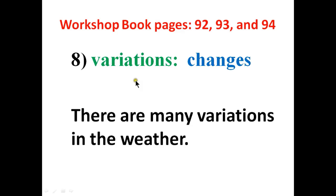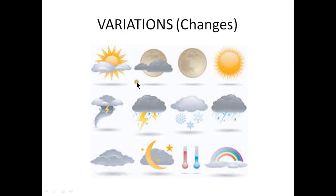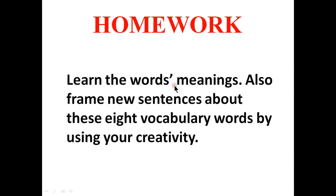The last word is 'variations.' Variations means changes. The sentence is: there are many variations in the weather. The pattern of weather doesn't remain the same throughout the year — it keeps changing day by day or month by month; sometimes it is rainy, sometimes snowy, sometimes sunny. So far we have done our word meanings, sentences, and question answers. You will do all these things again as your homework. Thank you very much — see you next time. Till then, bye bye, stay home, stay safe.